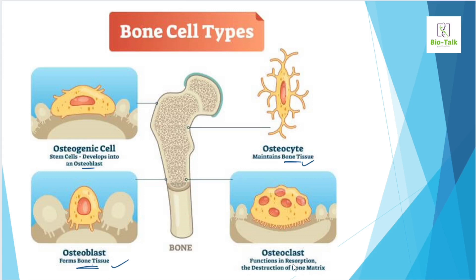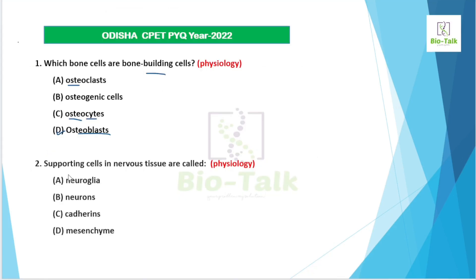Osteoblasts handle bone formation and bone tissue operation. Coming to the next question: supporting cells in nervous tissue are called what? This is a visual image question as well, so let's continue.